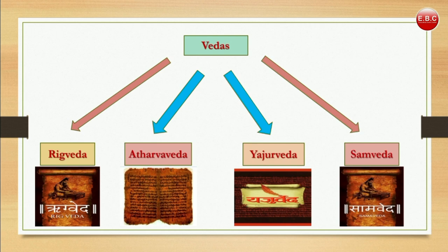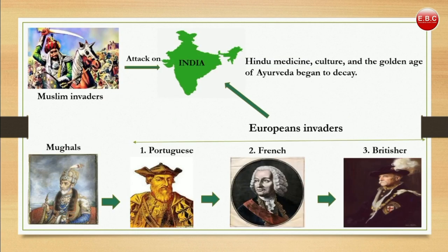Hindu medicine flourished well during this period, but after that the glory of Hindu medicine rapidly declined. The golden age of Ayurveda ended when Muslim invaders attacked the country, and no original works could be done. Hindu medicine gradually began to decay after the Mughal period.